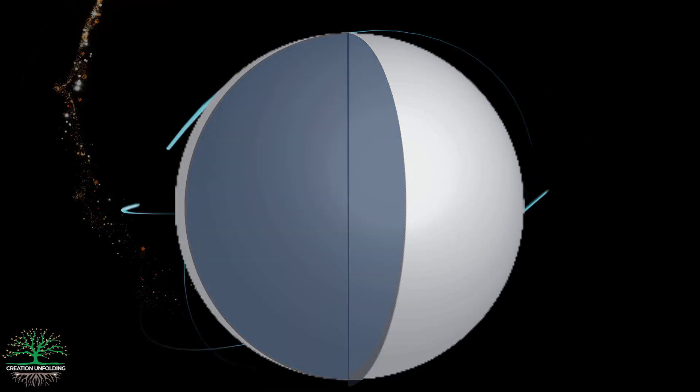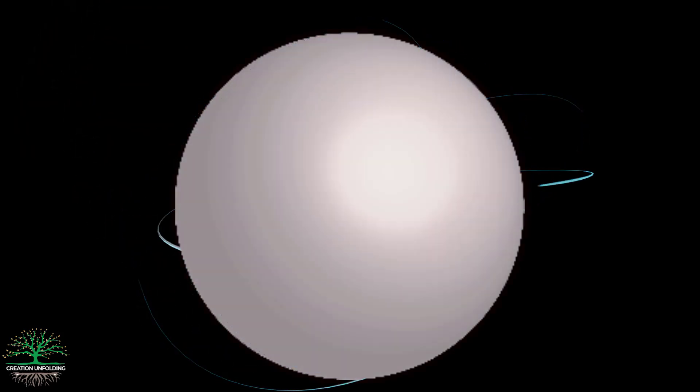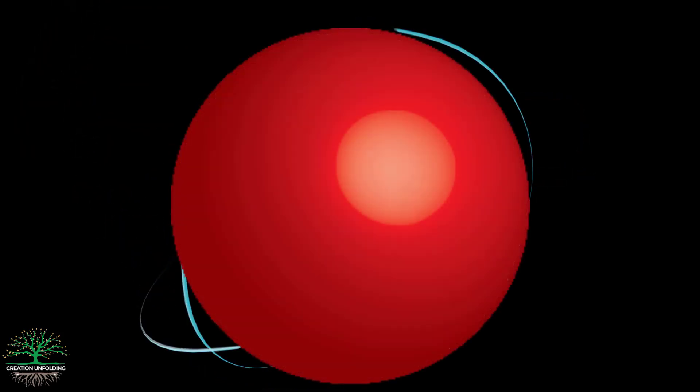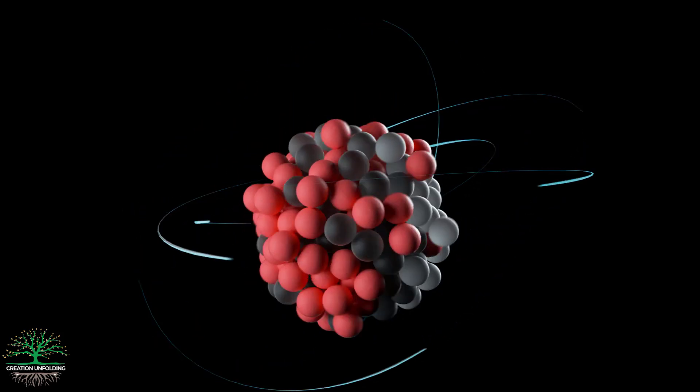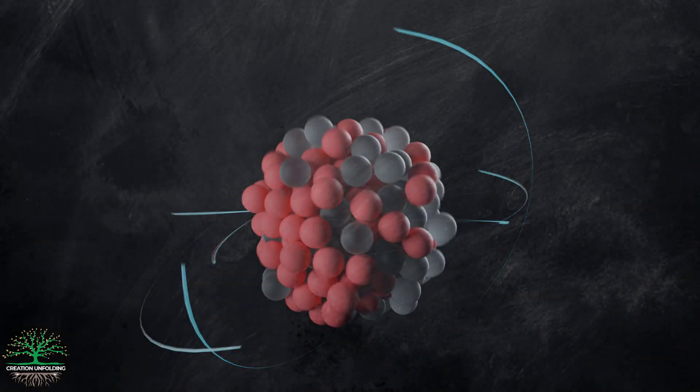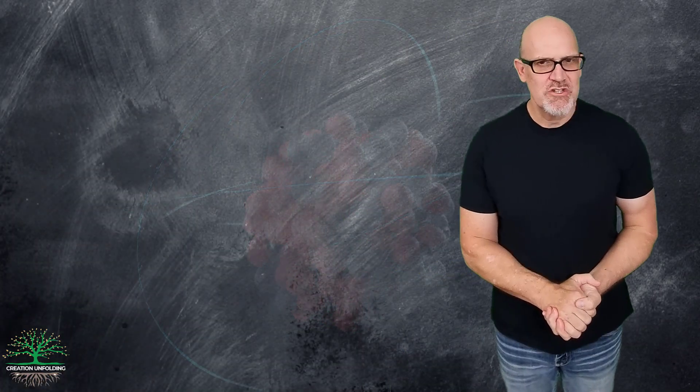In a minus beta decay, one of the neutrons in a thorium-234 atom ejects or emits its electron. When this happens, this neutron turns into a proton. What do you think happens to the atomic mass number? Does it change?